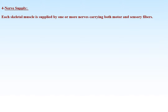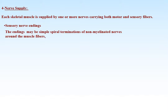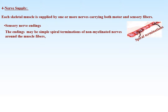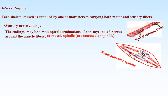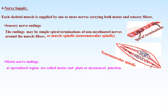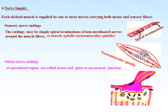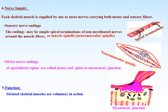White fibers or type 2 have rapid, short, fatigable contraction — that is, fast twitch. Nerve supply: each skeletal muscle is supplied by one or more nerves carrying both motor and sensory fibers. Sensory nerve endings may be simple spiral terminations of non-myelinated nerves around the muscle fibers, or muscle spindles known as neuromuscular spindles. Motor nerve endings at specialized regions are called motor end plates or myoneural junctions. Striated skeletal muscle fibers are voluntary in action, under the control of the will.